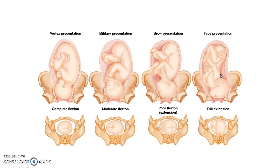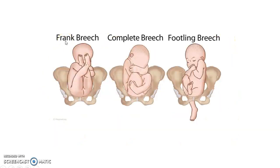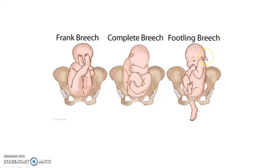As you can see, the attitude of the fetus plays an important role in determining the presenting part. In case of breech presentation, when the legs are extended it is called frank breech. When the legs are flexed it is called complete breech. And when one lower limb is flexed and the other is extended it is called footling breech.